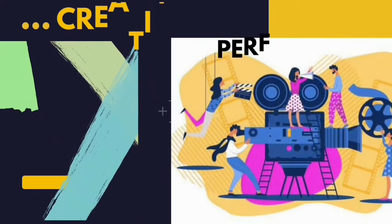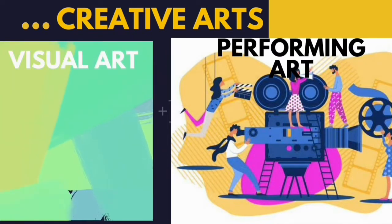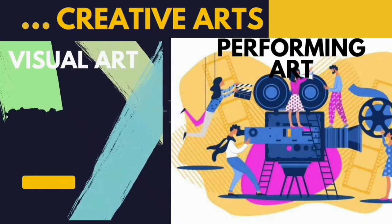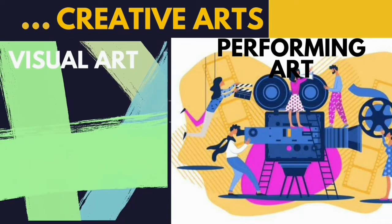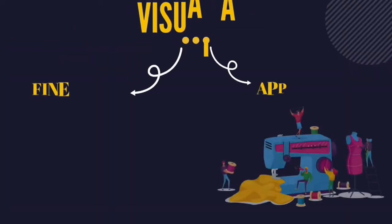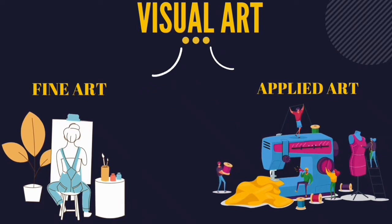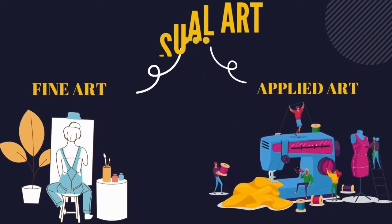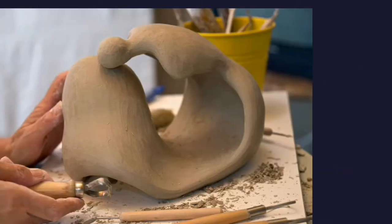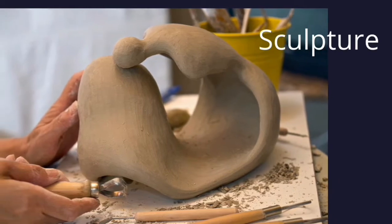Now let's see the different branches of art. Creative art is divided into two, which are visual art and performing arts. Going further, visual art is divided into fine arts and applied arts.